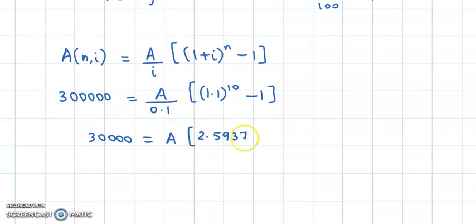2.5937 minus 1. So finally, A's value is 30,000 divided by